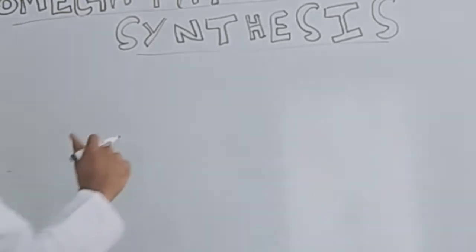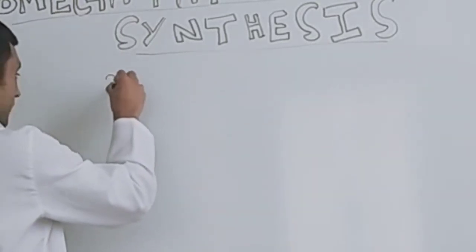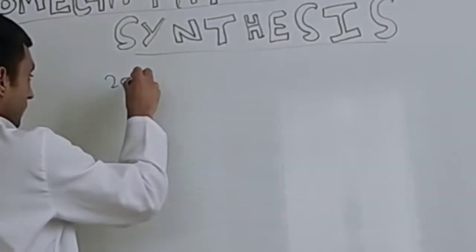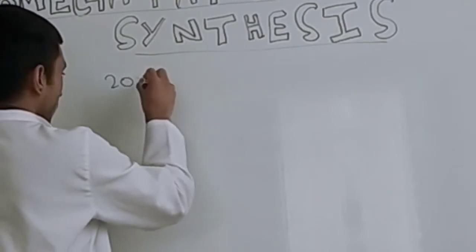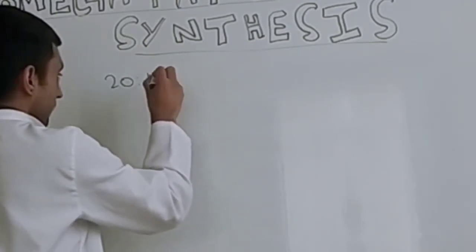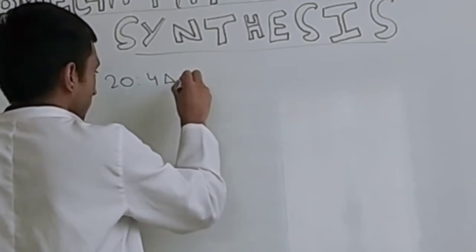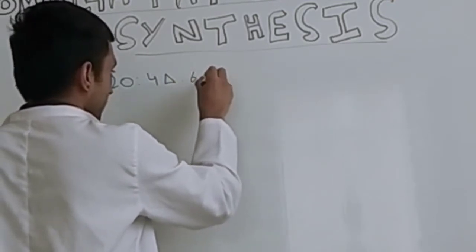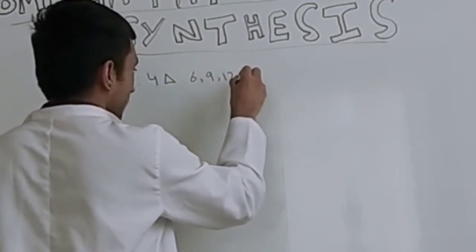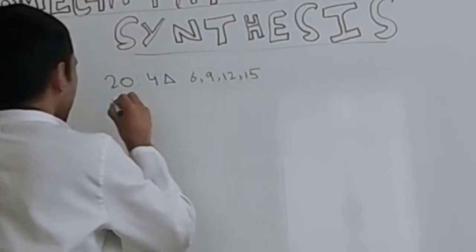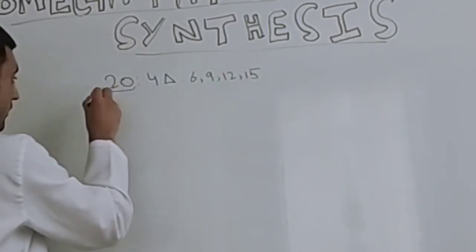To write the double bonds, it is like this: first we have the number of carbon atoms and a colon, then we have the double bond, for example 4 delta for double bond, and then the location of those double bonds like 6, 9, 12, and 15.